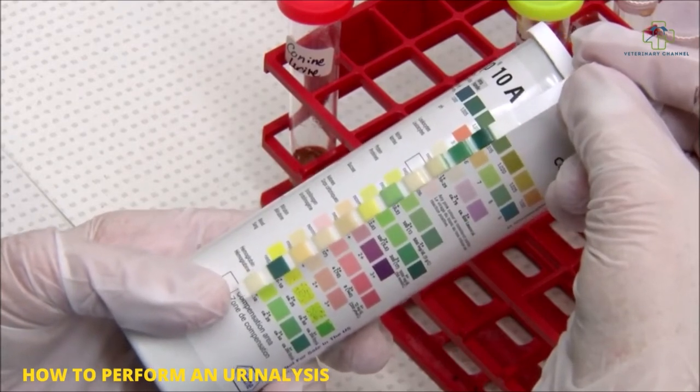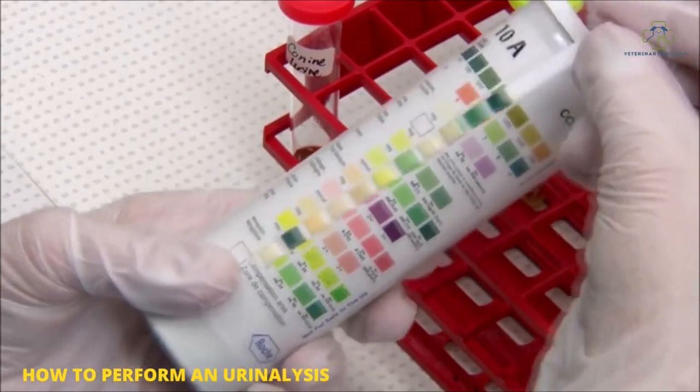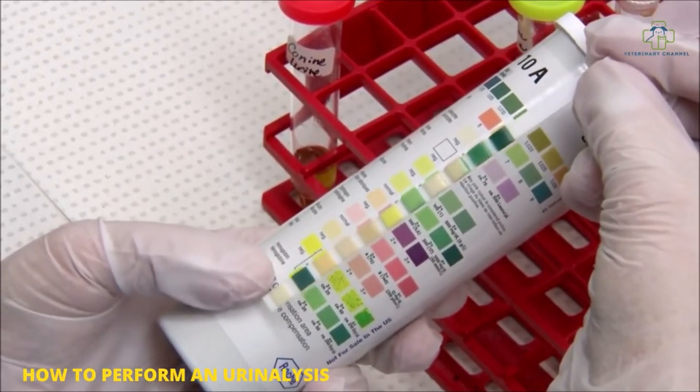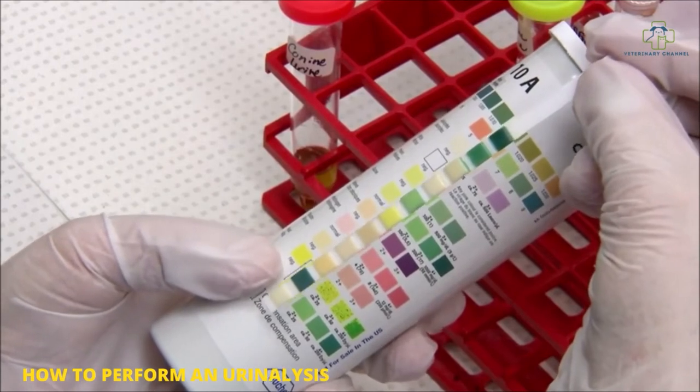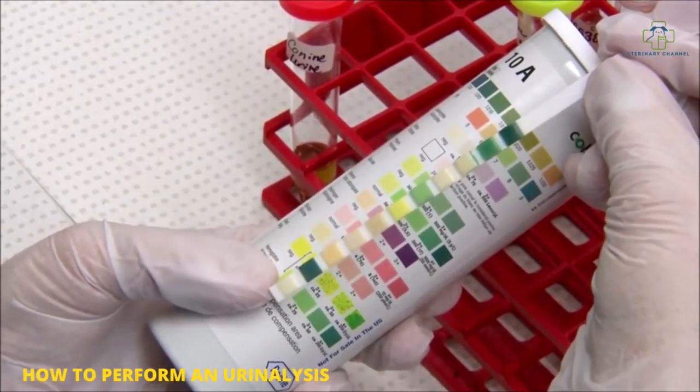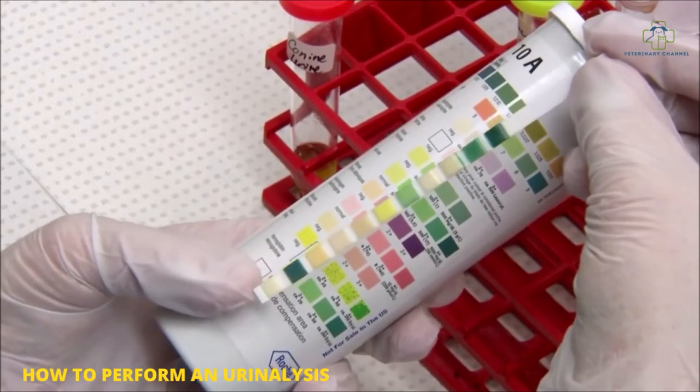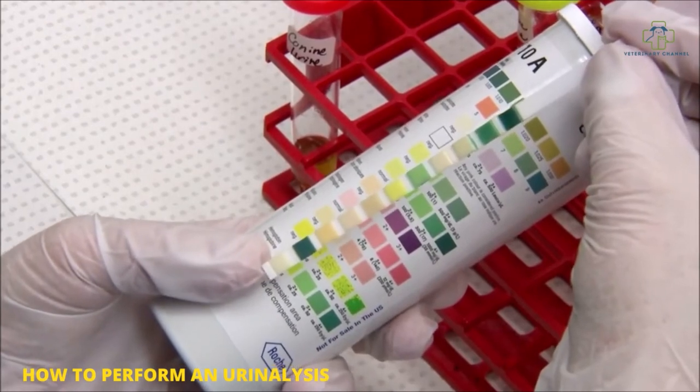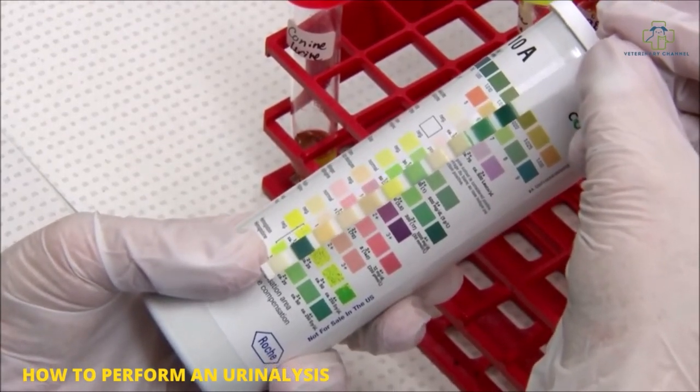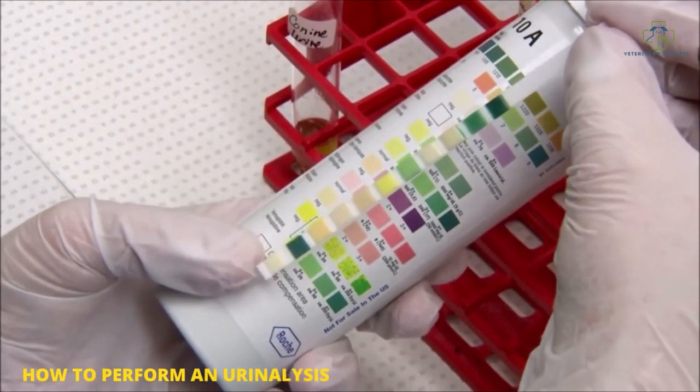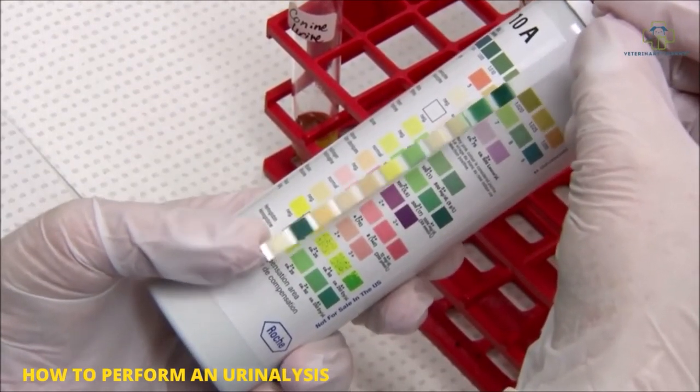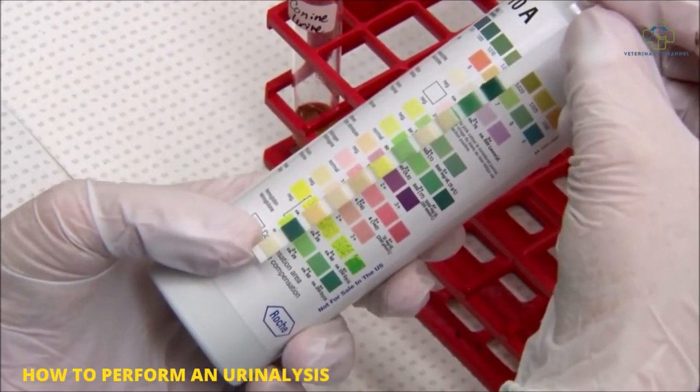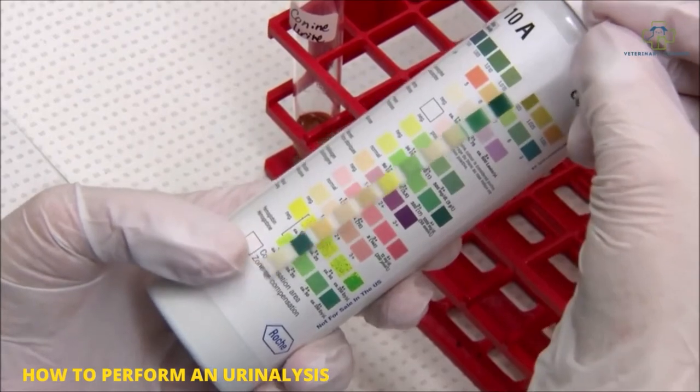Bilirubin is reported as negative up to three plus. For blood, you're going to have one square on your strip and two squares on your strip container. The speckled one is the intact red cells, the solid one is the hemoglobin. We don't differentiate it; we just report it up to three plus and greater than three plus if blood is actually visible in your urine. Read all your reactions within 120 seconds.